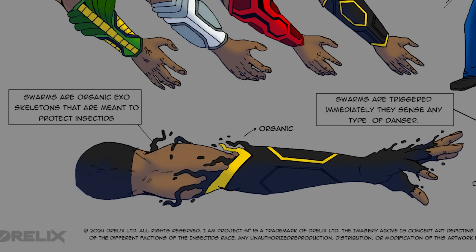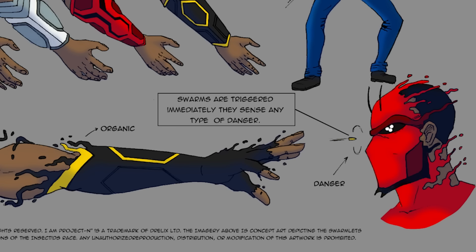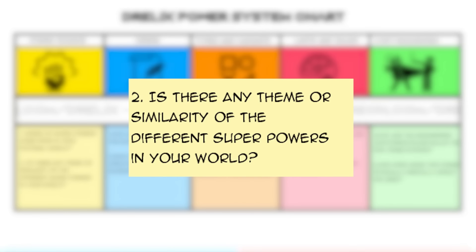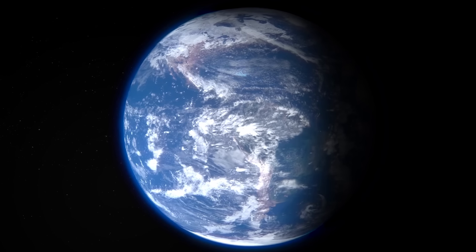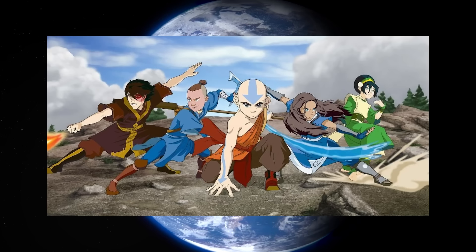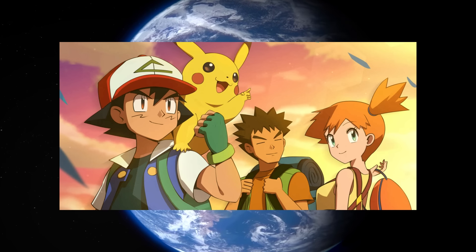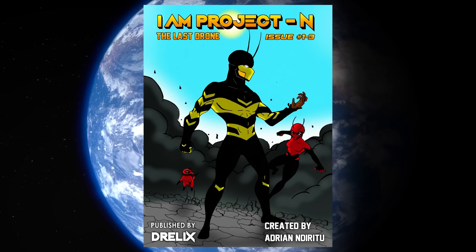My main character is a bee insectid — half human, insect-human hybrid. Swarms are triggered immediately; they sense any type of danger. If you shoot a bullet at an insectid, the swarm comes on immediately. Swarms are actually organic, not nanotech, which is a question I keep getting from people who've read the comic. It's just an organic suit — actual biological material. And on top of that, it's connected to the user's genetics, so you can't just take somebody else's swarm and use it on yourself.